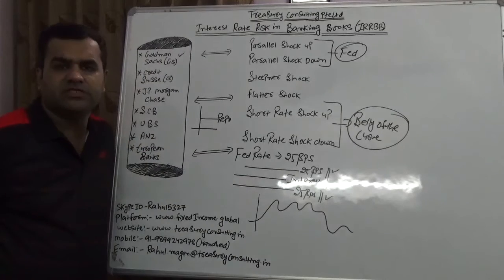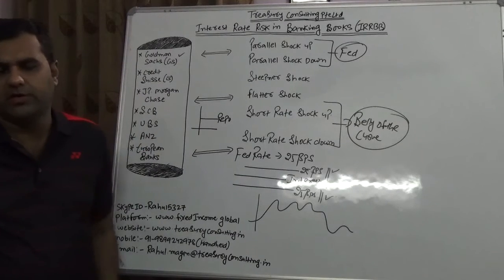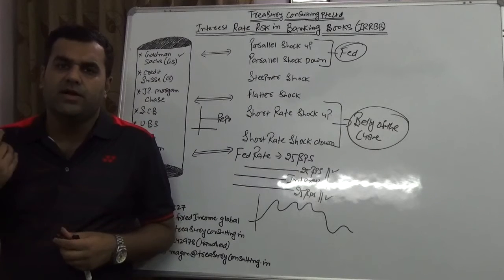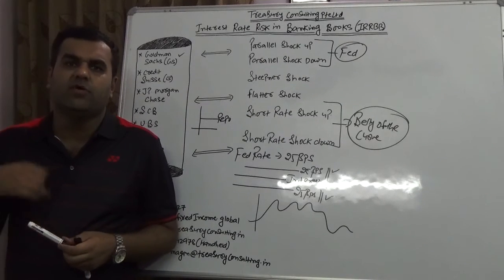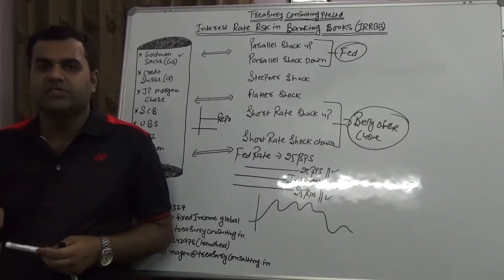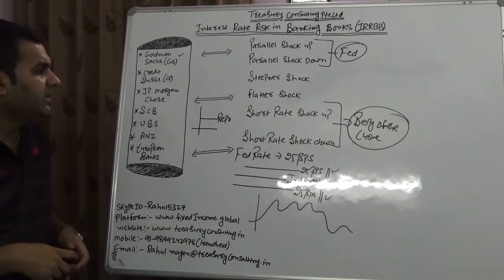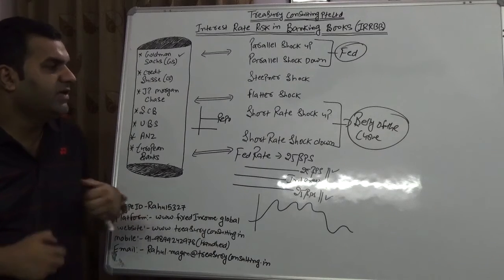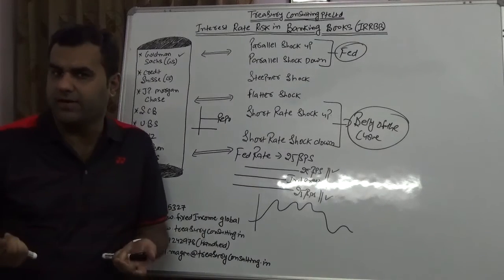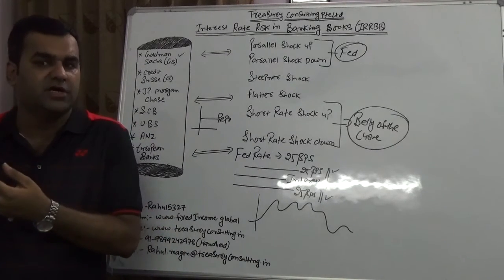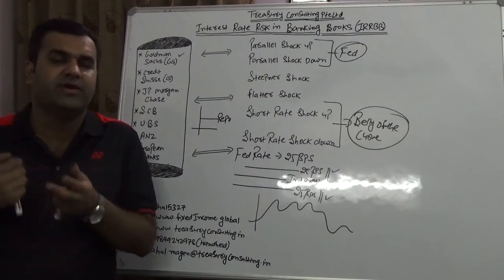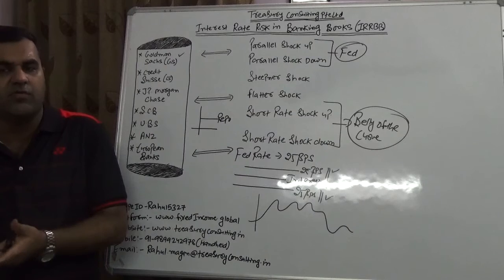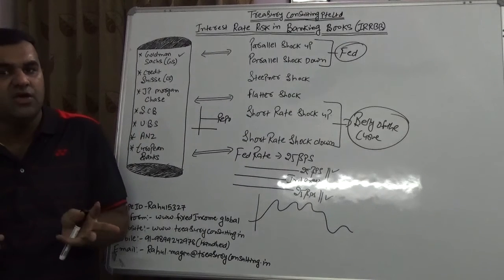Interest rate risk in the banking book is a pretty important thing for people to learn. Immunization will come here, cross-immunization, net immunization, immunization of only assets, and immunization of only liabilities. Last but not least, how you would be hedging that — you would hedge using various ways: dollar swaps, reverse dollar swaps, linkers, floaters, adjustable rate securities, floats, caps, range forward contracts, and FRA — forward rate agreements. There are a lot of ways through which you can hedge.